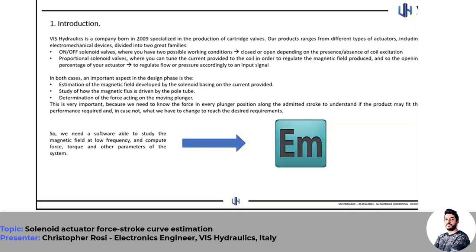In a proportional solenoid valve, you have different working points depending on the amount of current injected in the coil. An external controller tunes the current via PWM modulation according to an input signal from a controller or joystick, allowing you to tune the magnetic field and the force acting on the plunger, and regulate the opening or closing percentage of the actuator to control flow or pressure in a hydraulic circuit.